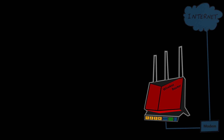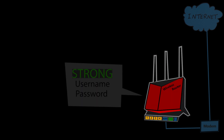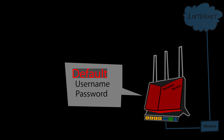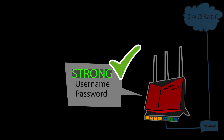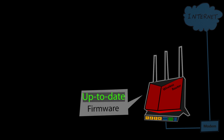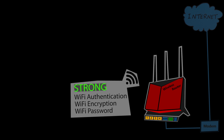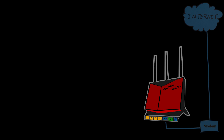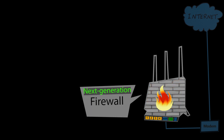First things first: regardless of having IoT devices or not, it is always a good idea to make sure my network is overall secure. For example, if I have a wireless router as the heart of my network, the router itself should be secured with a strong username and password — so I need to make sure I've changed the default credentials to something more secure. I also need to make sure the firmware of the router is always up to date, the Wi-Fi is secured with strong authentication, encryption, and password, and there is an active firewall protecting the network — preferably a next-gen firewall where I can take advantage of useful features such as an intrusion prevention system.